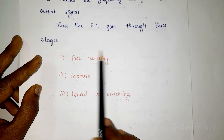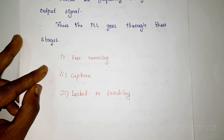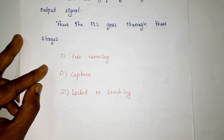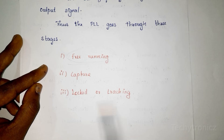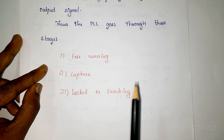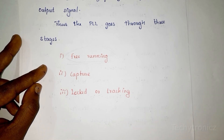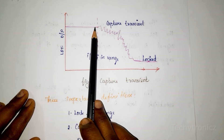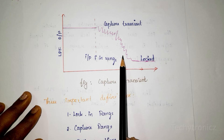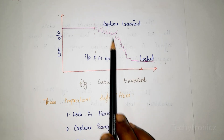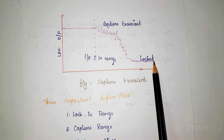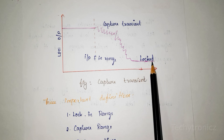The three stages are: free running stage, capture range, and locked (tracking) range. Free running stage is the starting stage where the oscillator creates the free running frequency. Capture range is when the control voltage shifts the VCO frequency in a direction to reduce the frequency difference. Looking at the graph: the free running stage is first, then the capture stage where frequency shifts to reduce the difference, and finally the locked stage where F0 equals Fs — the circuit is said to be locked.